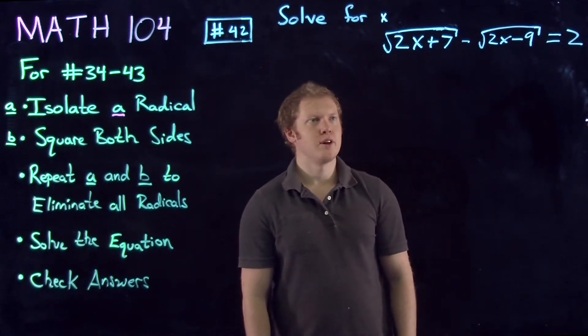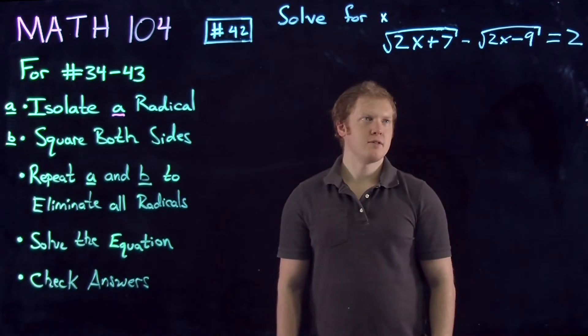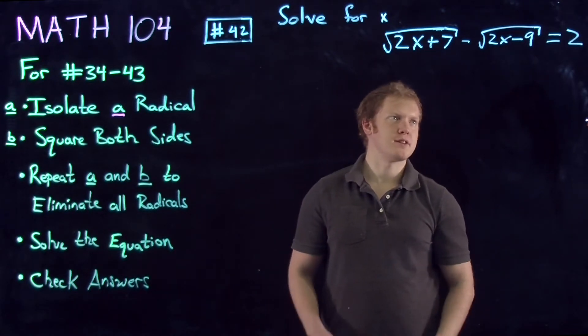We want to solve for x in the equation: the square root of 2x plus 7 minus the square root of 2x minus 9 equals 2.